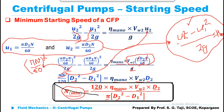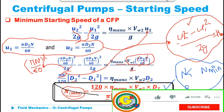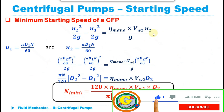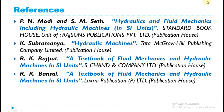If the speed N is less than N_min calculated from this expression, there will be no flow through the centrifugal pump. This is the expression for minimum starting speed, and using it we can easily calculate what the minimum speed of the centrifugal pump should be. Those are the references used while preparing this presentation. Thank you for watching.